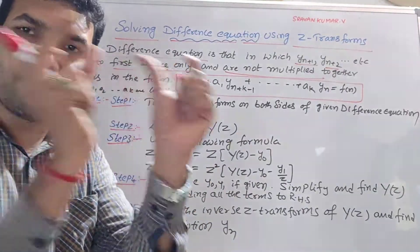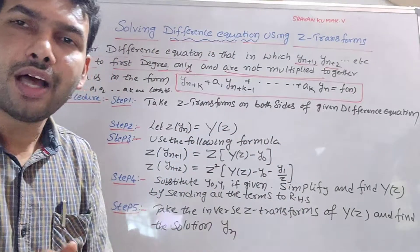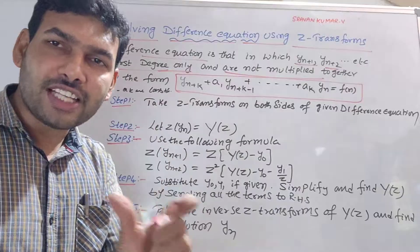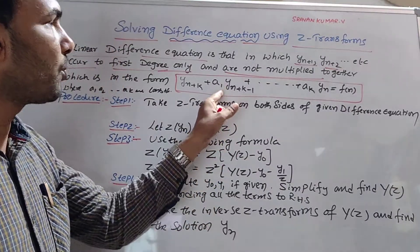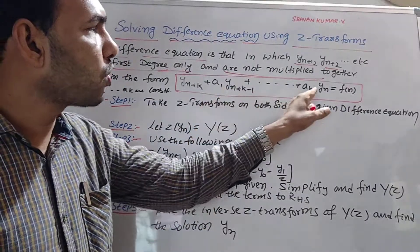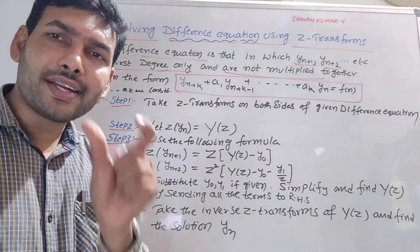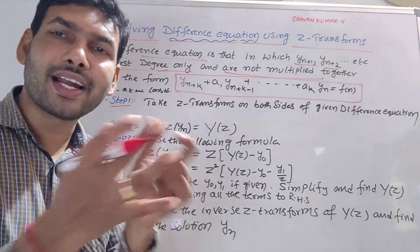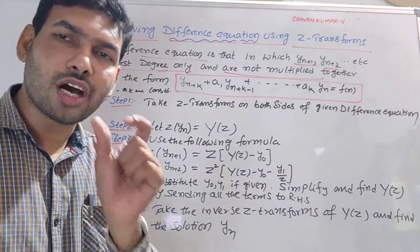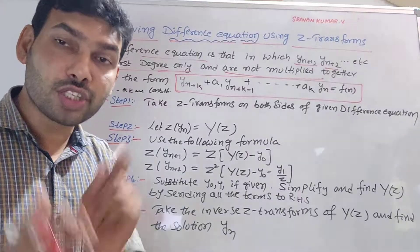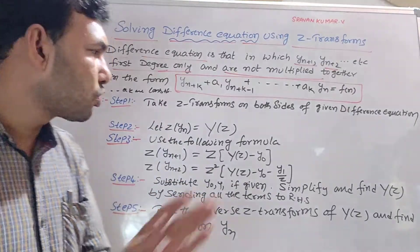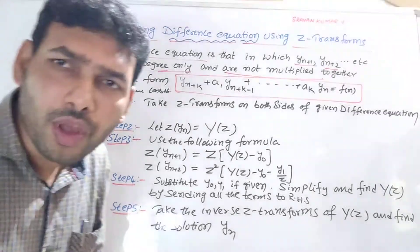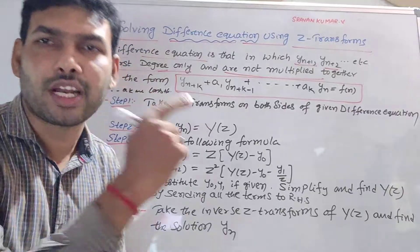So, yn+1 plus 2 into yn plus 2 — like that — all such equations are difference equations. A difference equation with constant coefficients has a general form with constants A1, A2, and so on. All such equations we have to solve using Z transforms.